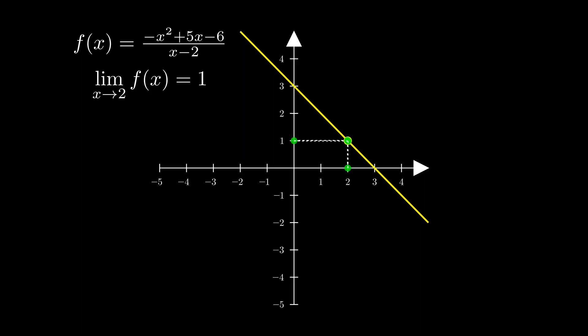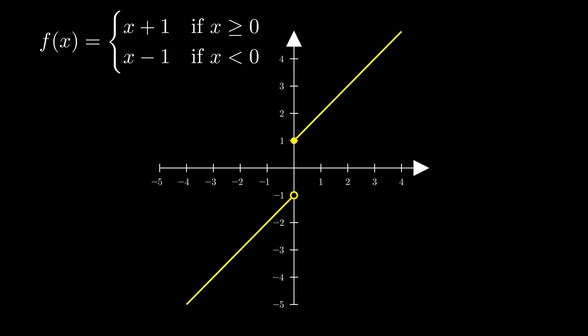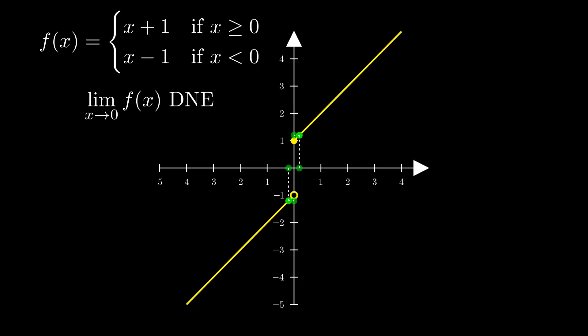However, it's also possible for a limit to not exist for an input value on a function. If we look at this function and desire to know what the limit of it is as x approaches 0, we find an issue. If we approach x equals 0 from the left, we see that the function values approach negative 1. But, if we approach x equals 0 from the right, we see that the function values instead approach 1. An important characteristic of a limit is that the function value attained as we approach the input value from the left must match the function value attained as we approach it from the right. If this does not occur, then we say that the limit does not exist, notated as DNE.